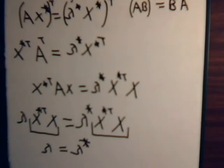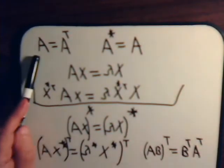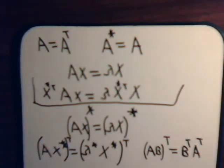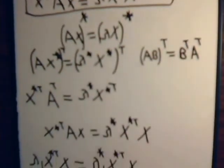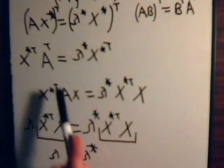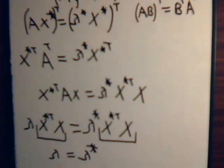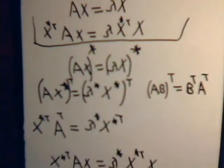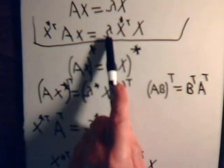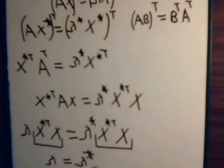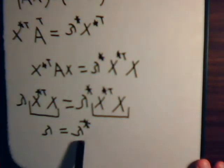The only way lambda can equal its complex conjugate is if it's a real number. So that's our proof that when we have a matrix equal to its transpose, all of its eigenvalues are real — there are no complex eigenvalues involved. The key step where we used the fact that A is symmetric was when we had A transpose and replaced it with A, since A and A transpose are the same for a symmetric matrix. That made the two expressions identical, enabling us to equate the eigenvalue terms, leading to the conclusion that eigenvalues must be real.